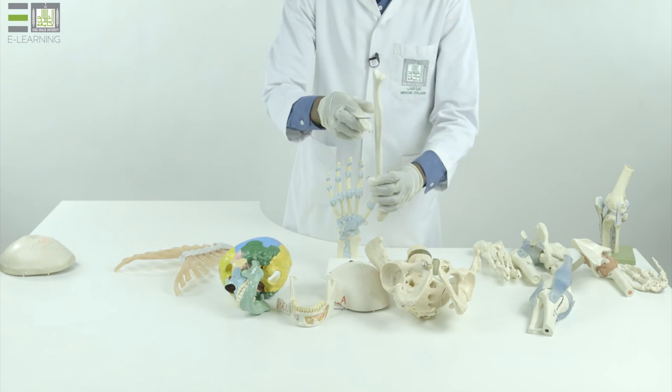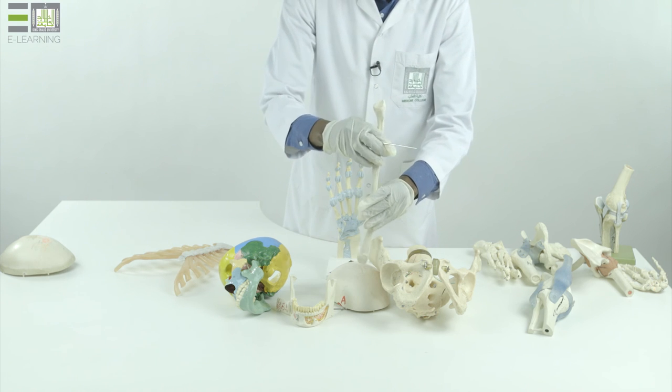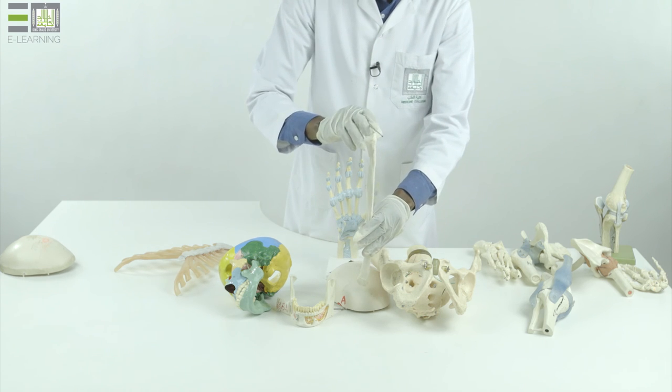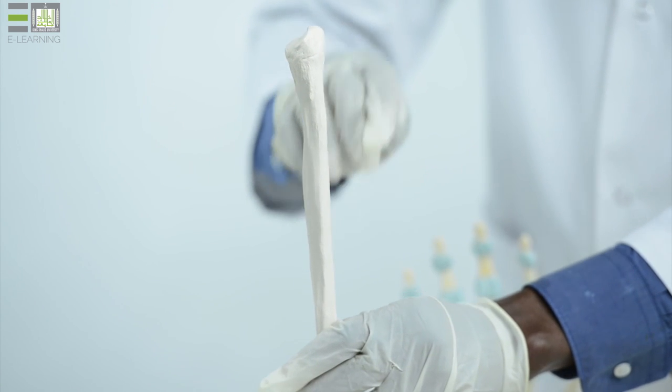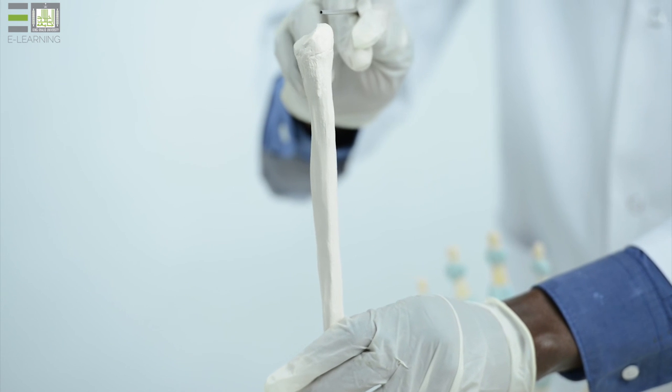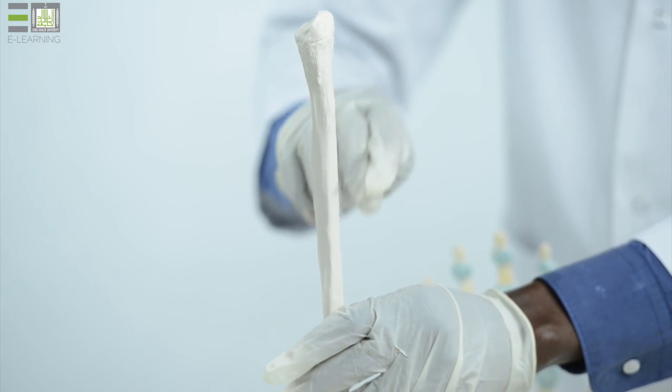The second type of cartilaginous joint is the primary cartilaginous, which is present between the upper part and the middle part of the bone, or the epiphysis and diaphysis, or the end of the bone and the shaft of the bone.